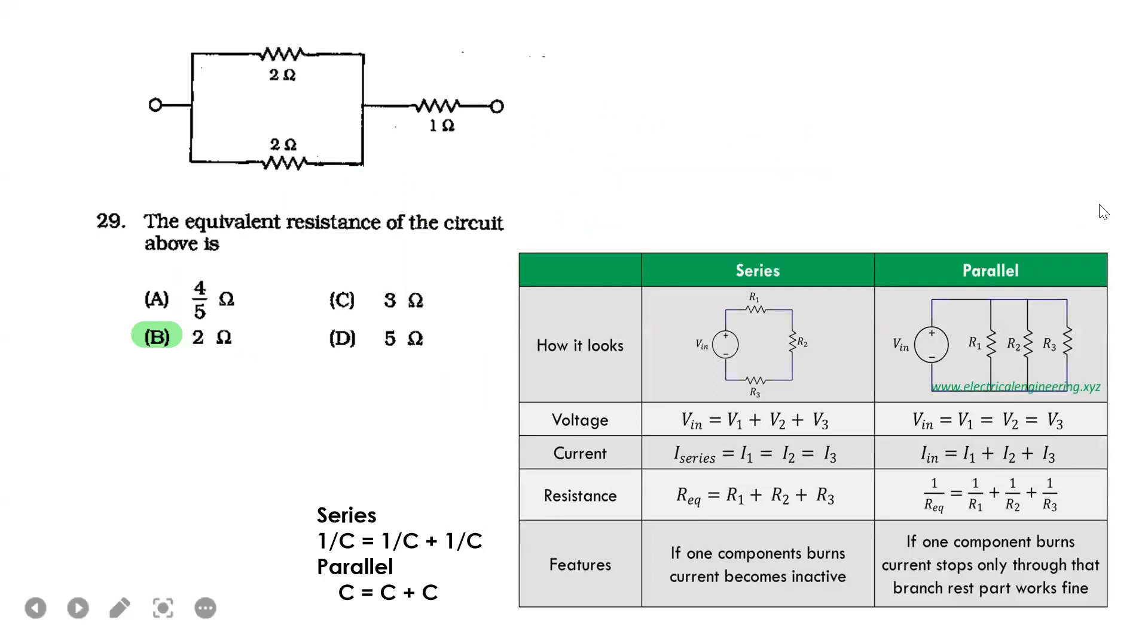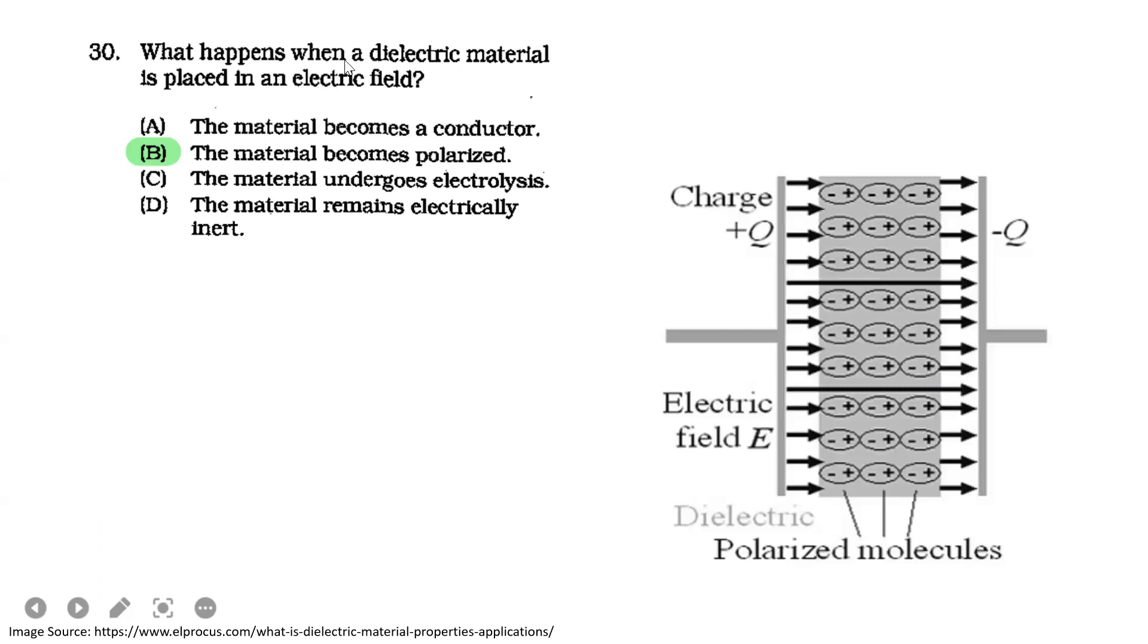What happens when a dielectric material is placed in an electric field? A dielectric material has positive and negative charges. When an electric field passes through, polarized molecules form. The positive is attracted to the negative, so the positive goes there, but it doesn't continue because they repel each other since they're polarized. Polarized molecules form.